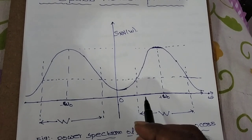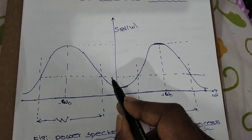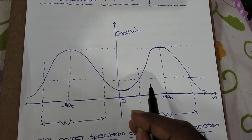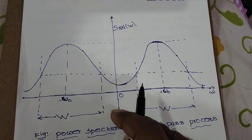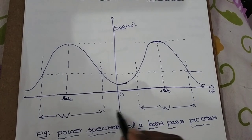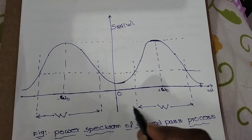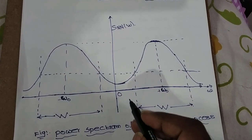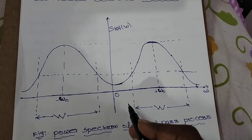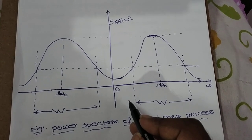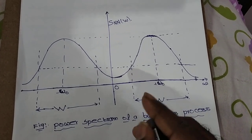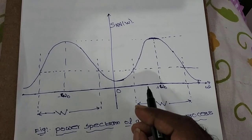Power spectral components are present within bandwidth W and does not include omega equal to zero, as shown in figure. But in practice, the spectrum may have a small amount of power at omega equal to zero. The spectral components outside the bandwidth W are very small and can be neglected.